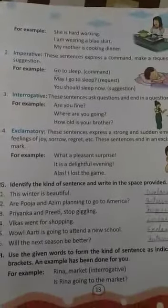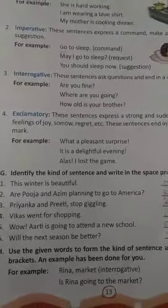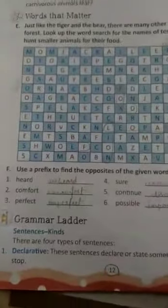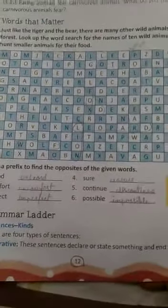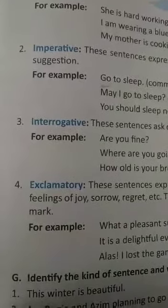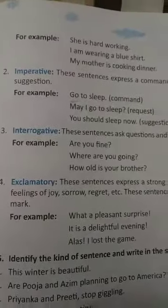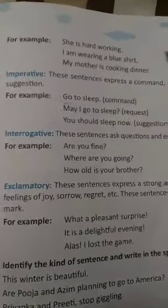Hello, good morning students. Welcome back and let's continue with the chapter. Yesterday we discussed sentences and their kinds. There are four kinds of sentences: first, declarative; second, imperative; third, interrogative; and fourth, exclamatory. I hope you understood these things.